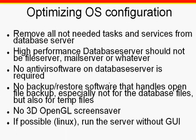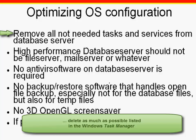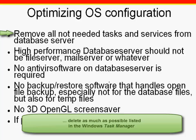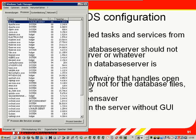To optimize your operating system, firstly remove all unnecessary tasks and services from the database server. Scrutinize anything listed in the task manager. If you're unsure why it's there, stop it running and, if possible, de-install the application that started it in the first place. A Windows system can run with a minimum number of processes on a dedicated database server.